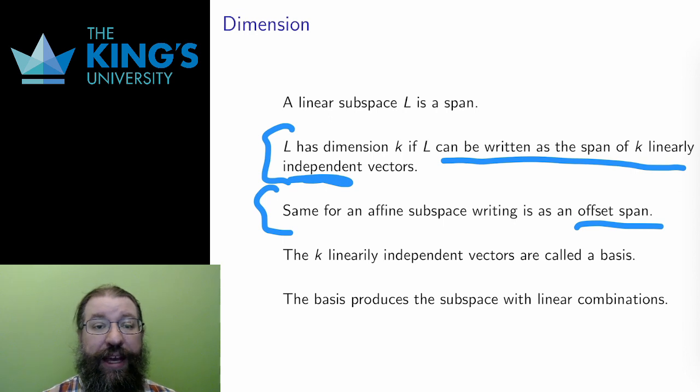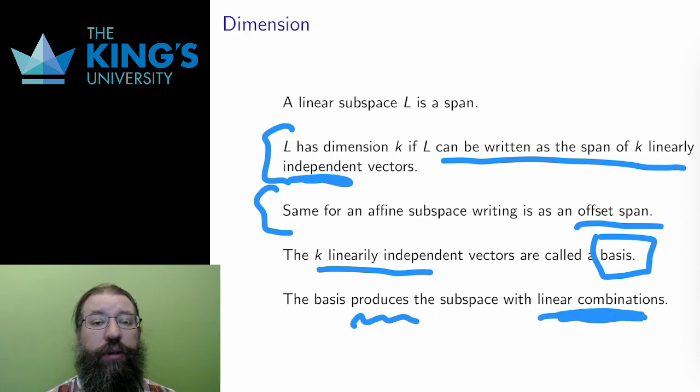These k linearly independent vectors are called a basis for the linear subspace. The linear subspace is the span of its basis. So the basis is called the spanning set for the subspace. It produces the subspace by taking all linear combinations. And that's what span means, remember?